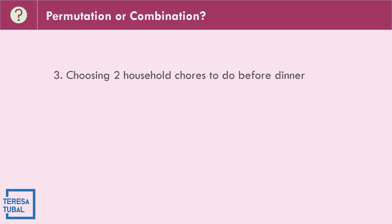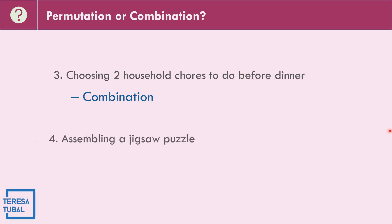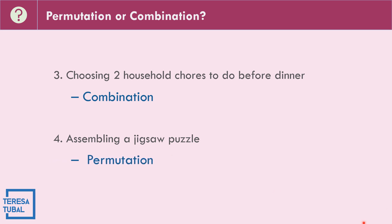Number three: choosing two household chores to do before dinner — this is a combination because order is not important. Number four: assembling a jigsaw puzzle — this is a permutation because the order of the jigsaw puzzle is important.